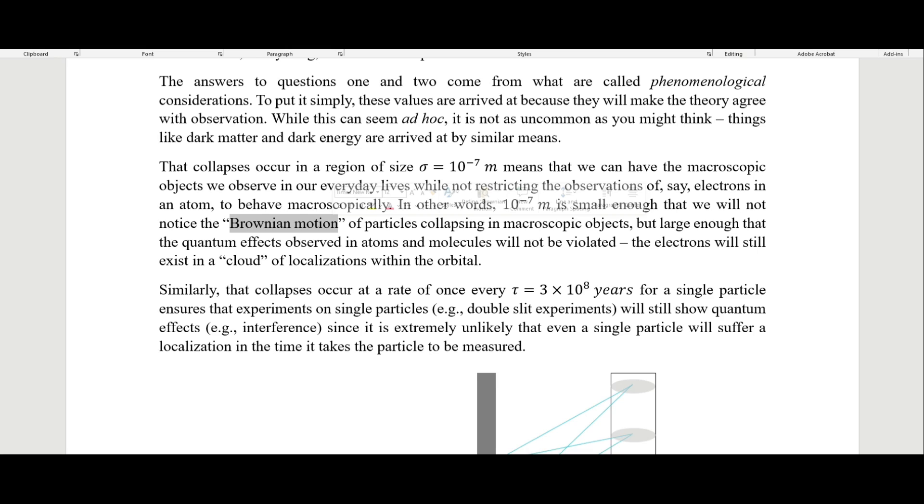When we have many particles, the collapses are actually happening a lot more often, but it's still happening in finite time. And so you would see a sort of Brownian motion of the particle collapsing here and there within a small area. This 10^-7 meters is small enough that we would not see that in macroscopic objects, but it's large enough that the quantum effects observed in atoms and molecules will not be violated. The electrons will still exist in a cloud of localizations within the orbital.